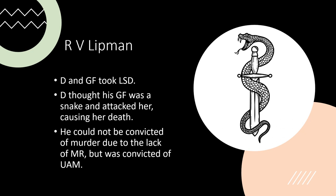In Lippman, the defendant and his girlfriend took LSD. The defendant thought his girlfriend was a snake at the centre of the earth, and attacked her, causing her death by shoving bedsheets down her throat. He could not be convicted of murder due to lack of mens rea from the LSD, but he was convicted of unlawful act manslaughter because he had taken the LSD voluntarily — a reckless course of conduct — which substitutes the reckless element for the basic intent offence.